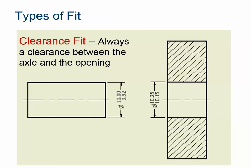Let's talk about how to interpret which type of fit you have. Here's an example — an axle rod that's going to be put into an opening on another part. You have a series of limit dimensions. The rod itself has an upper limit of 10.00 and a lower limit of 9.92. When you look at the axle hole in the other part, the lowest it can be is 10.15. So there's always going to be a clearance between these two parts — as little as 0.15 or as much as 0.33.